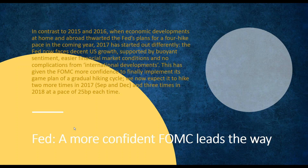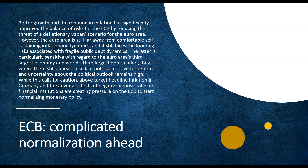In contrast to 2015 and 2016, when economic developments at home and abroad thwarted the Fed's plans for a four-hike pace, 2017 started out differently. The Fed now faces decent US growth supported by buoyant sentiment, easier financial market conditions, and no complications from international developments. This has given the FOMC more confidence to finally implement its game plan of a gradual hiking cycle. We now expect it to hike two more times in 2017 — September and December — and three times in 2018. So we have the Fed meeting coming in early September, expecting a rate hike and a plan to start cutting back their balance sheet — slowly and gradually, but it makes a big change.